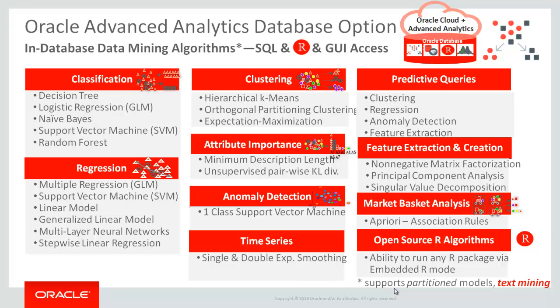All of our algorithms — accessible via native SQL functions, via R integration, and via the Oracle Data Miner GUI — because they're in-database implementations, they can analyze both structured data and unstructured data. Sometimes this point is lost on people. There's a footnote at the bottom that says 'text mining' — all of these algorithms, whether clustering, decision trees, or support vector machines, can mine structured data, unstructured data, and transactional data like market basket analysis data.